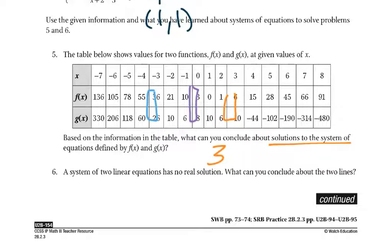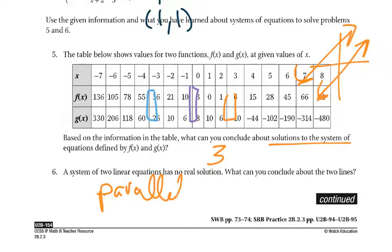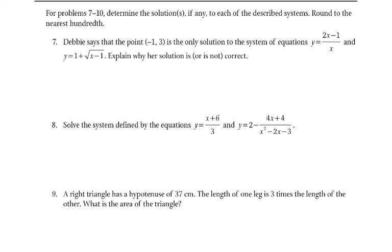Now, 6 says a system of two linear equations has no real solution. What can you conclude about the two lines? Well, if I graph a linear equation, it's a straight line. It keeps going. The only way they're never going to intersect is if I have another one that's parallel. So we know they're parallel, which means parallel means they have the same slope. So number 7.